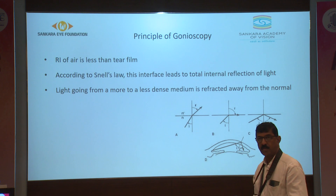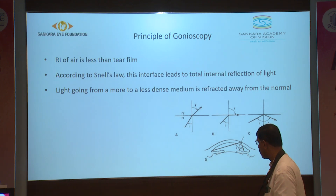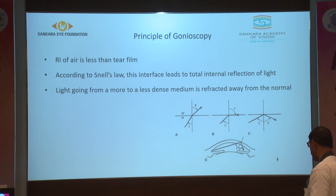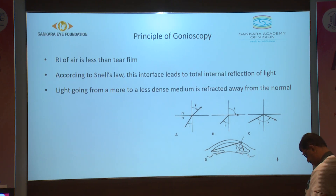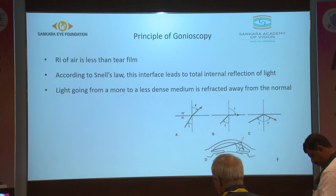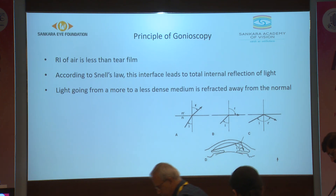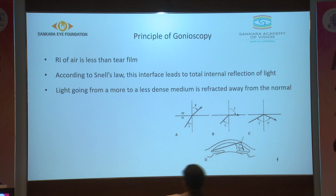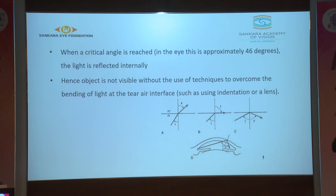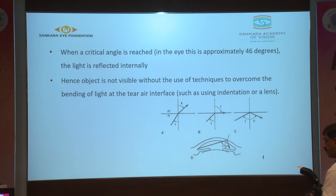The principle of gonioscopy is based on the fact that the refractive index of air is less than the tear film. According to Snell's law, this interface leads to total internal reflection, as light going from a more dense to a less dense medium is refracted away from the normal. When this reaches a critical angle of 46 degrees, there is internal reflection. Hence we are not able to visualize the angle without use of gonio prisms or indentation.